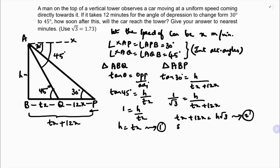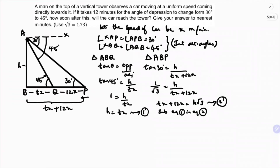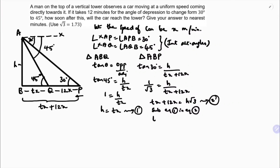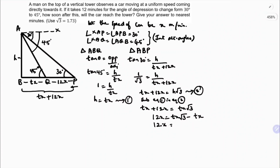Cross multiplying gives t-x plus 12x equals h root 3. This is equation 2. Now substitute equation 1 into equation 2. Since h equals t-x, we get t-x plus 12x equals t-x times root 3. So 12x equals t-x into (root 3 minus 1). Cancelling x on both sides gives t equals 12 by (root 3 minus 1).